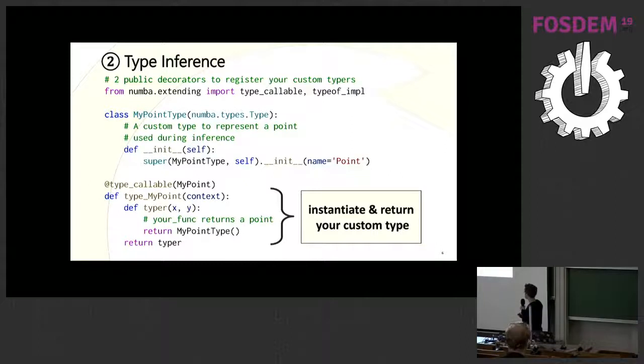Here we have callable, MyPoint constructor, which, if you use it in your Python code, will create a MyPoint object. This type callable is basically going to say, I want to infer the types of MyPoint constructor. This is going to generate your typer. And for a given x and y argument, you want to say, the return value is going to be of a type MyPoint type. That's basically how it works. That's the possibilities you have during type inference.